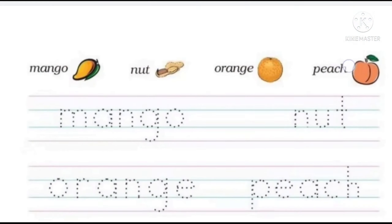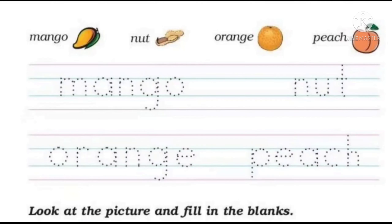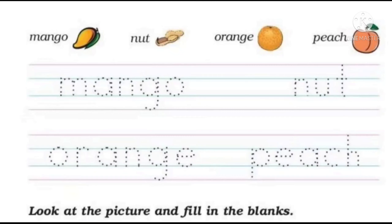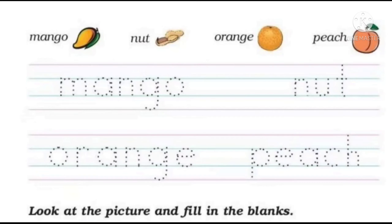Now let's move to the next page. Here you can see Mango: M, A, N, G, O. Mango means aam. So trace this. Next is Nut: N, U, T. Nut ka matlab hota hai jaise mungfali ho, ya almond, cashewnut, jo kaju badam hain ya nuts. Okay? Next is Orange: O, R, A, N, G, E. Orange yani ki jo hum santra bolte hain use hum orange kahte hain. Next is Peach: P, E, A, C, H. Peach is also one kind of fruit. So trace this spelling.